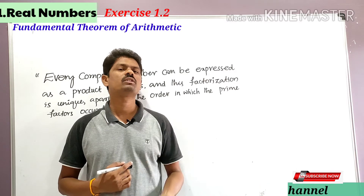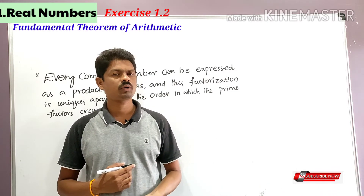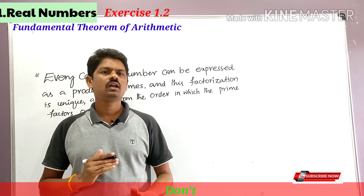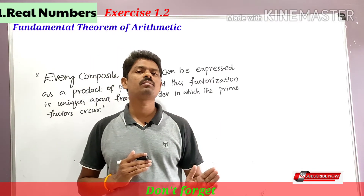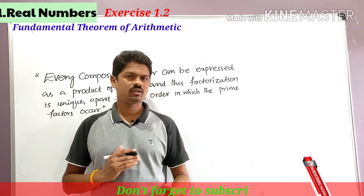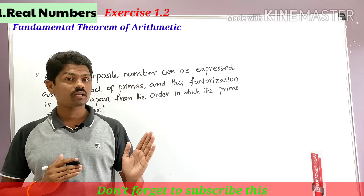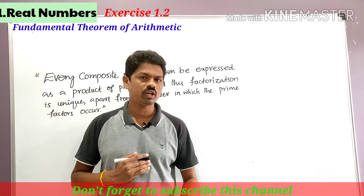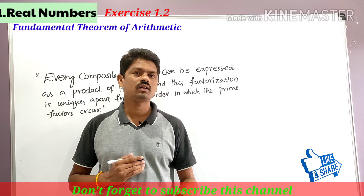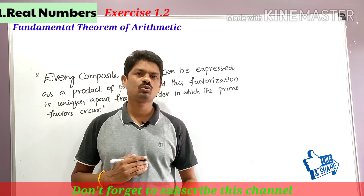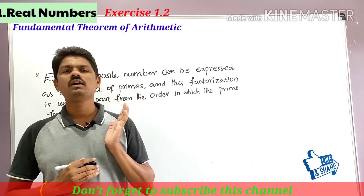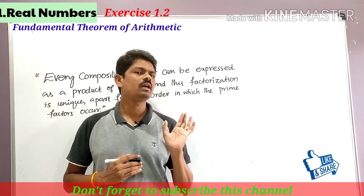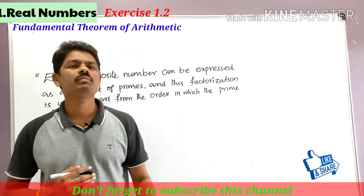Now, the statement of the Fundamental Theorem of Arithmetic: every composite number can be expressed as the product of primes, and this factorization is unique apart from the order in which the prime factors occur. This is the statement you need to remember.